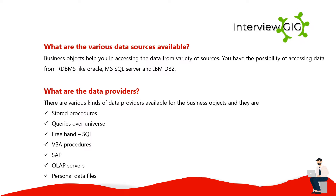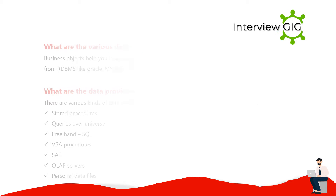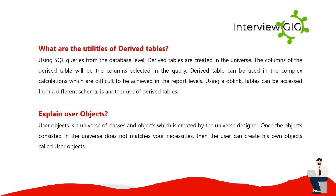What are the various data sources available? Business Objects helps you in accessing data from a variety of sources. You have the possibility of accessing data from RDBMSs like Oracle, MS SQL Server, and IBM DB2. What are the data providers? There are various kinds of data providers available for Business Objects, and they are: stored procedures, queries over universe, freehand SQL, VBA procedures, SAP OLAP servers, and personal data files.